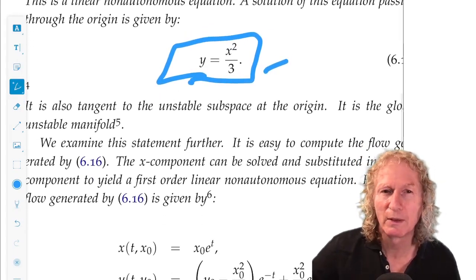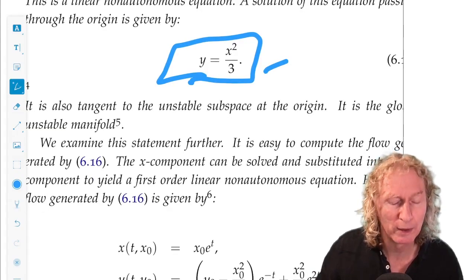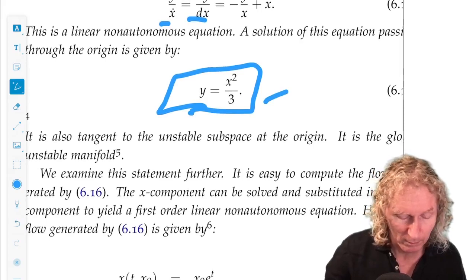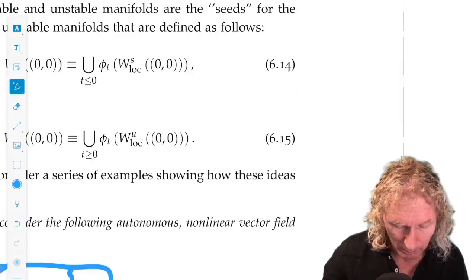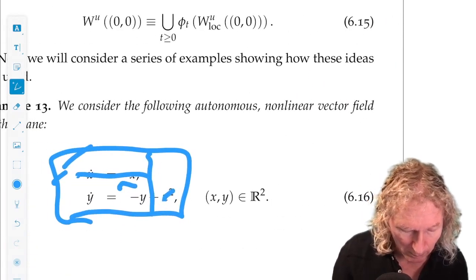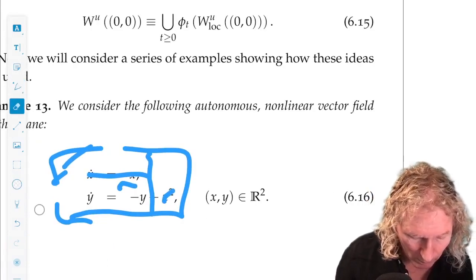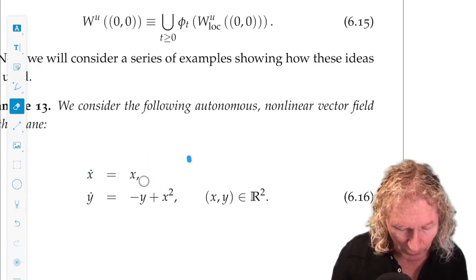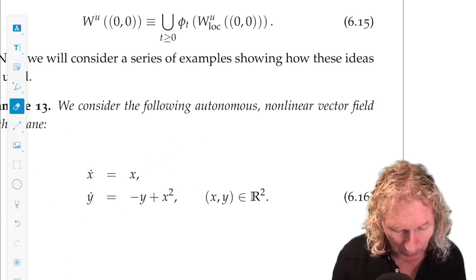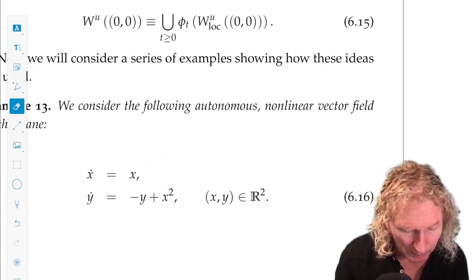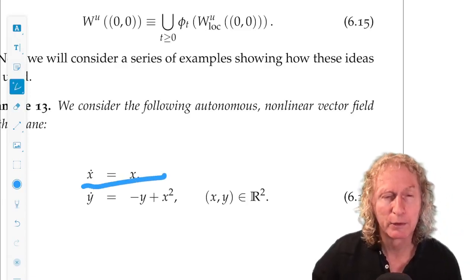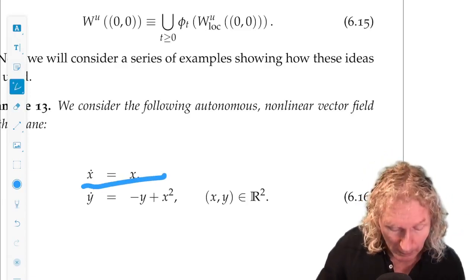But we can get a little bit of insight by solving for the trajectories. Now, go back to the equation. So, we can solve for x as a function of t and y as a function of t. We can solve it easily. The first one, x of t is x naught e to the t.